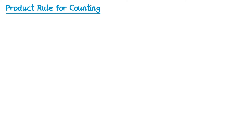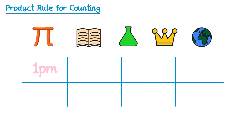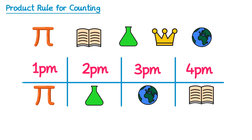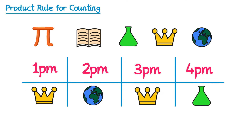Imagine now that you are creating a revision timetable. You've identified five subjects: maths, English, science, history and geography, and you've picked four hours to revise — 1 p.m., 2 p.m., 3 p.m. and 4 p.m. We want to consider how many different possibilities there are. For example, at 1 p.m. maths, 2 p.m. science, 3 p.m. geography and 4 p.m. English. But of course you could also repeat subjects — history, then geography, then history again, then science for example.